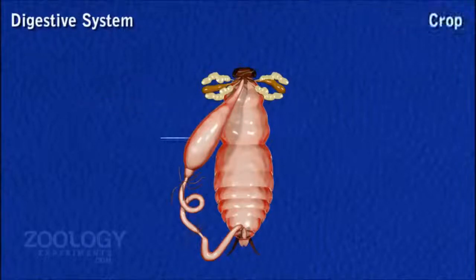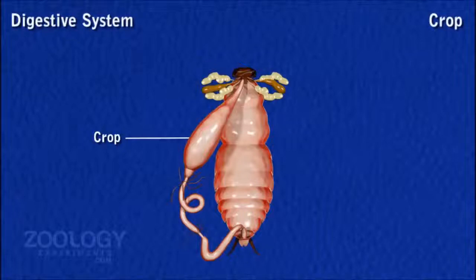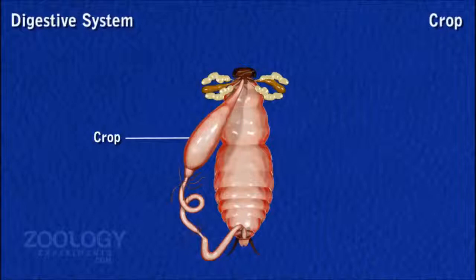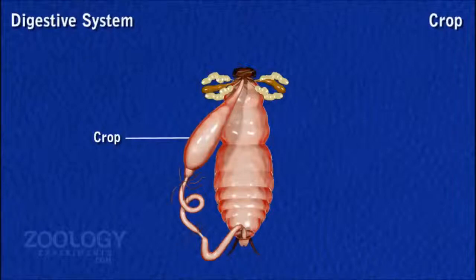Crop: It is a large, thin-walled, pear-shaped sac covering the major part of the abdominal segment. It is the largest part of the foregut. Its internal epithelial and cuticular lining is very much folded, and its outer surface is covered by a network of trachea. The crop acts as a reservoir for storing food.